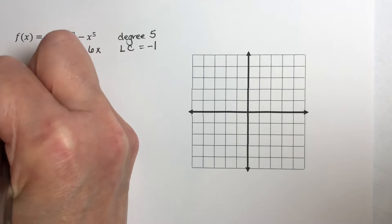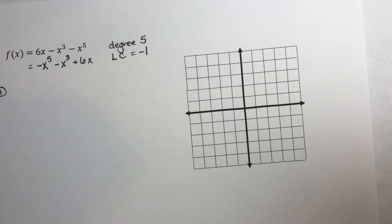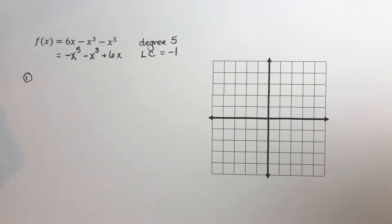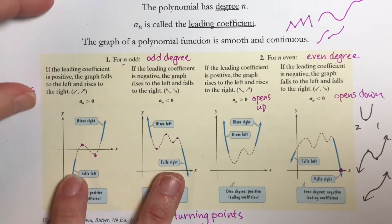The first thing we are supposed to do is look at the leading coefficient test so we can find the end behavior. Our degree is 5, which is odd, so we're going to have one of these two options.